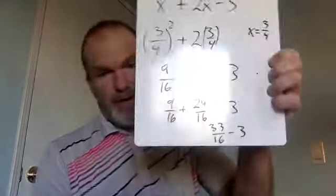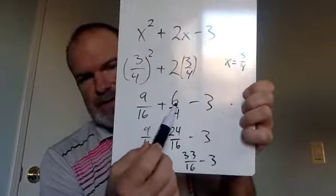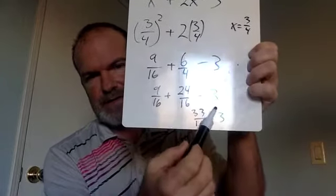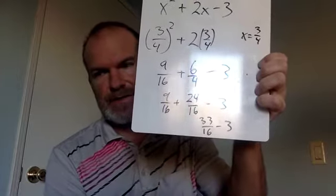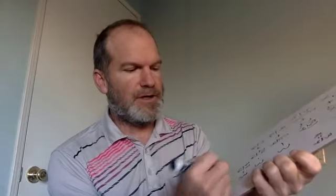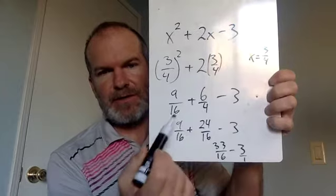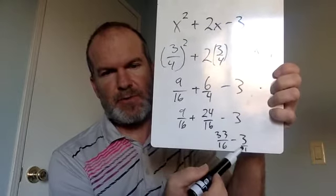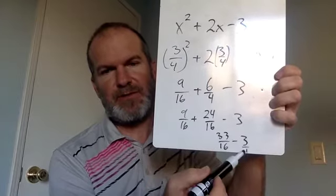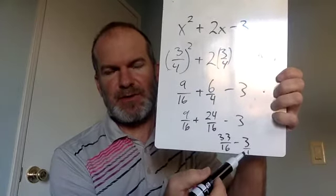You still have to subtract 3 from 33 sixteenths. And that is not going to be easy for a lot of people. But it's the same process to get from 6 fourths to 24 sixteenths as it is to get from 3 to 48 sixteenths. You might be like, what? Well, think of 3 as 3 over 1. And how do you turn a 1 into a 16? Remember, you're turning the little denominator into the big one. 1 is smaller than 16. 1 is the little denominator. How do you turn it into the big one? You multiply it by 16. Whatever you multiply the bottom by, you multiply the top by. So this becomes 33 over 16 minus 48 over 16, because 3 times 16 is 48.